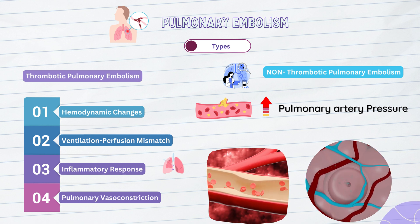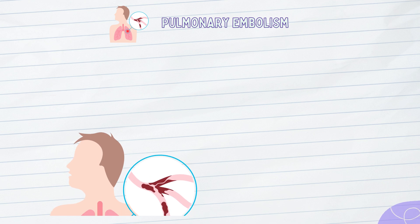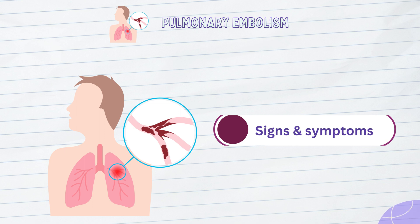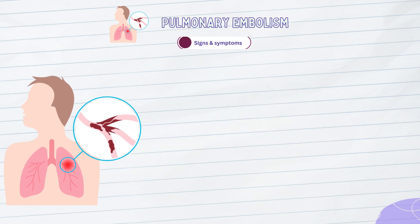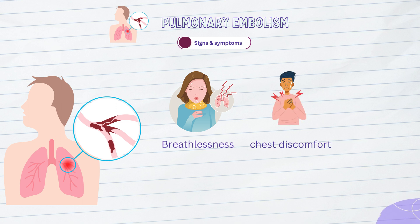These pathophysiological mechanisms collectively contribute to the clinical manifestations and potential complications associated with pulmonary embolism. Pulmonary embolism is a potentially fatal illness that must be treated as soon as possible. Healthcare providers in the ER are trained to recognize specific signs and symptoms that may suggest the presence of PE. The most common presenting symptom is sudden onset of dyspnea, or shortness of breath. Patients often describe it as feeling like they can't catch their breath or experiencing unexplained breathing difficulties. Patients may also suffer chest discomfort, which varies and might be acute or stabbing. Chest pain in PE might mimic other conditions such as a heart attack, so a comprehensive evaluation is required.